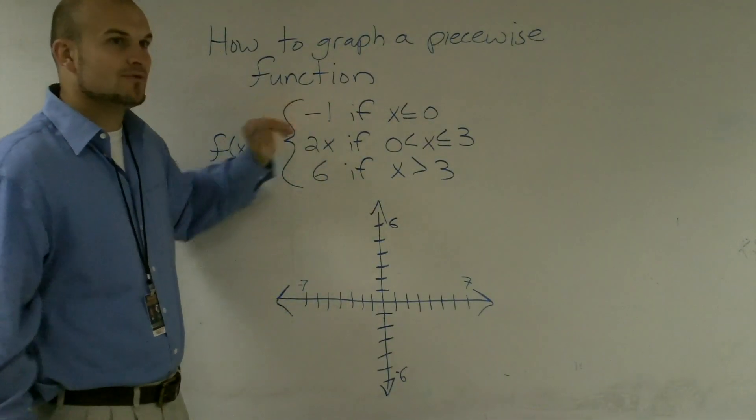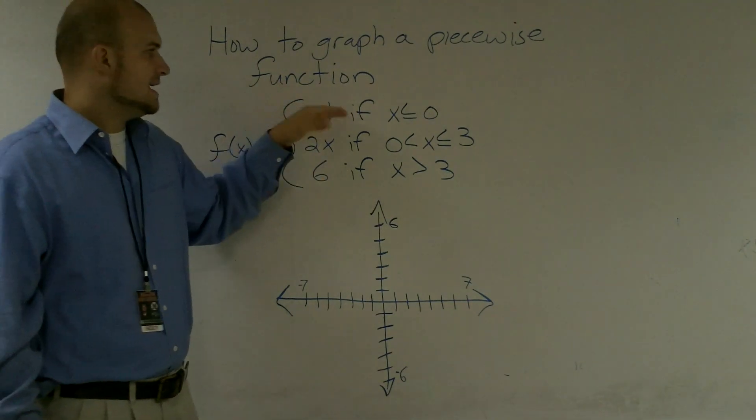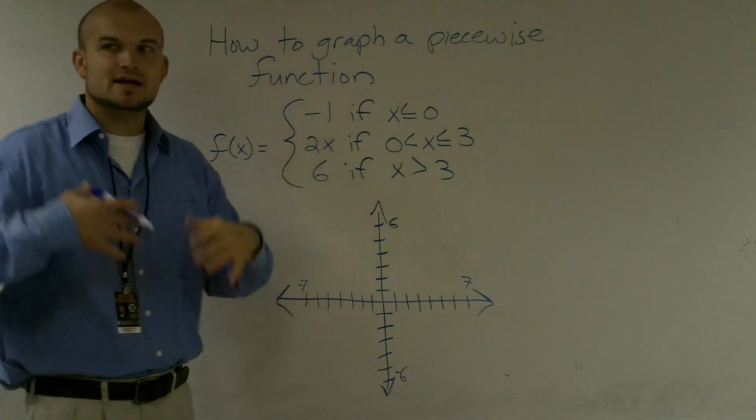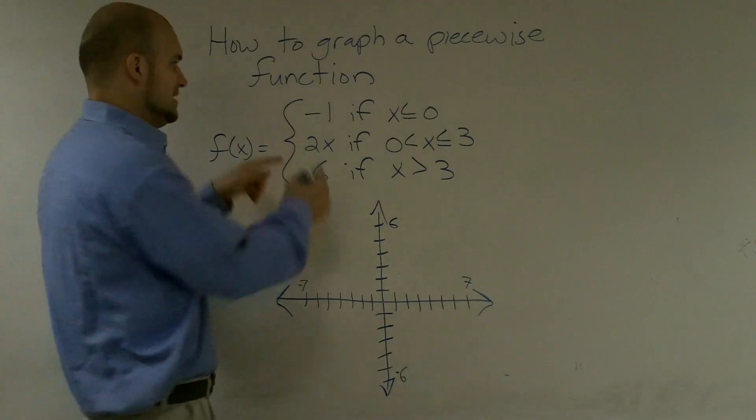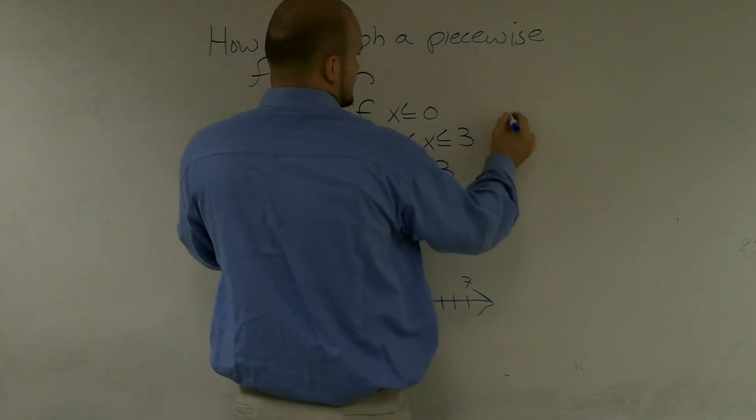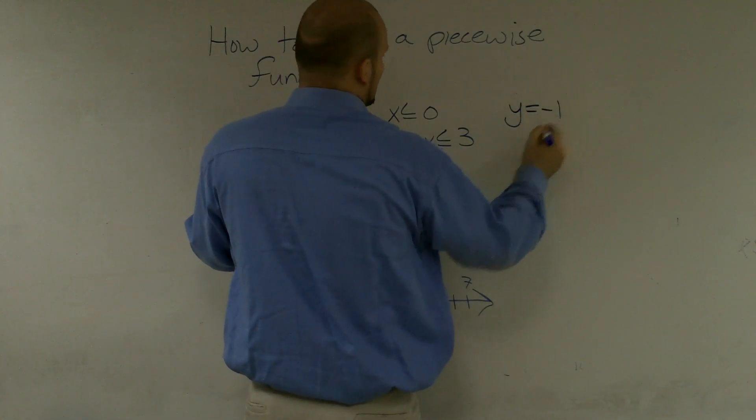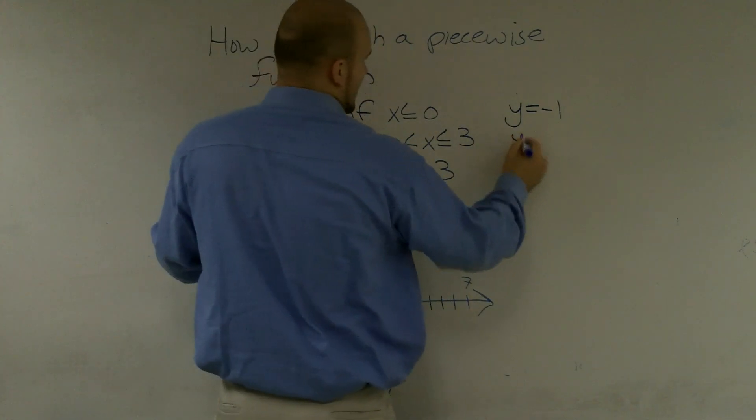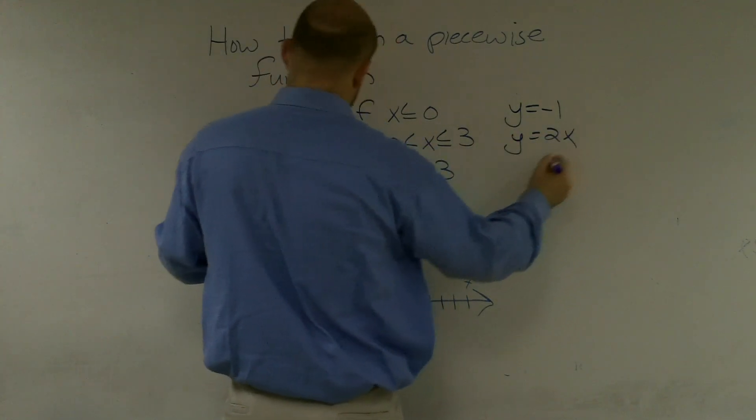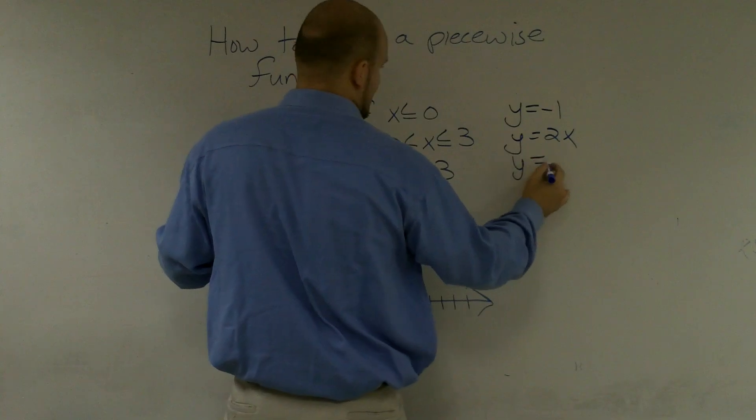So what I'm going to first do is rewrite each one of these expressions in y equals mx plus b form, so I can get my mind set up for what they actually mean. So this expression would be y equals negative 1, this would be y equals 2x, and this would be read as y equals 6.